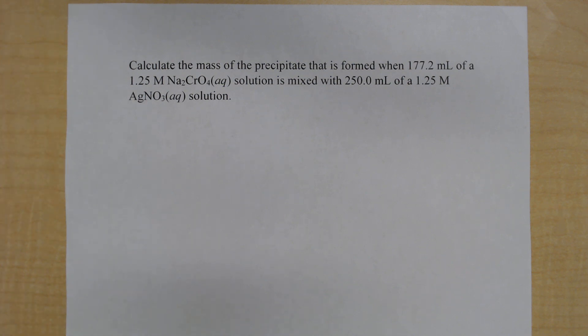Alright, so here we want to calculate the mass of the precipitate that is formed when 177.2 milliliters of a 1.25 molar sodium chromate solution is mixed with 250.0 milliliters of a 1.25 molar silver nitrate solution. So this is solution stoichiometry.